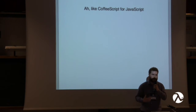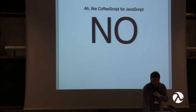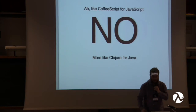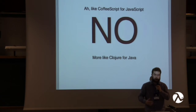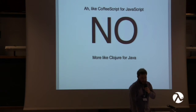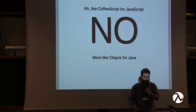This is the point where most people arrive at the conclusion that Elixir is just like CoffeeScript for JavaScript — just a nicer syntax over the same Erlang. Well, that's not true at all. It's more like Clojure for Java. It's a completely different environment with a completely different compiler from Erlang, which is probably what gives it the most power over Erlang. In the next part of the talk, I'll talk about what makes Elixir great and what distinguishes it from Erlang.